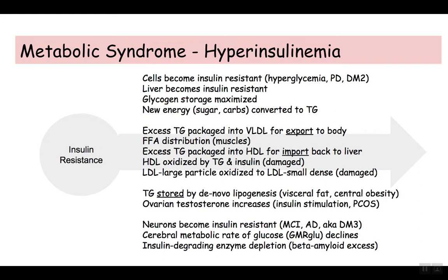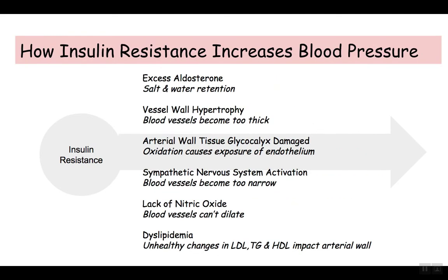I just wanted to whet your appetite a little bit about the systemic effects of metabolic syndrome. One of the things in metabolic syndrome is hypertension — elevated blood pressure. Insulin resistance also stimulates an aldosterone effect, and that leads to salt and water retention. This is a very strong association between high blood pressure and diabetes.